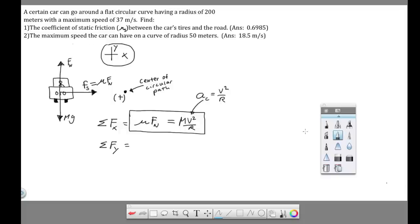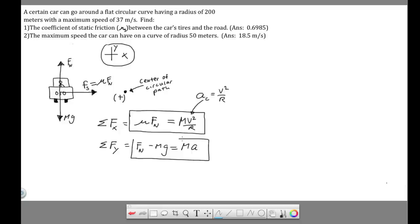Alright, now in the y direction, in the y direction we have normal force up and mg down. Normal force up, mg down. Sum of the forces is always equal to ma. And if we look at this situation, in the y direction here, there's no circular path and there's no linear acceleration, so there's basically no acceleration at all. That goes to zero. So we can basically just set this whole thing, since the a is zero, we can set the whole thing equal to zero.